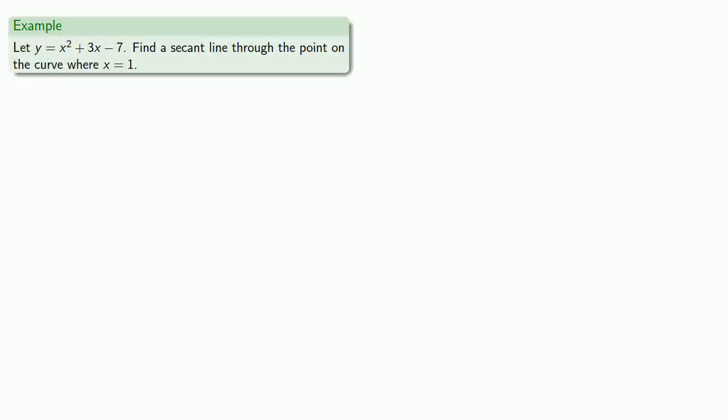For example, let y = x² + 3x - 7. Let's find a secant line through the point on the curve where x = 1. It's not necessary, but let's go ahead and put down a graph of our equation.